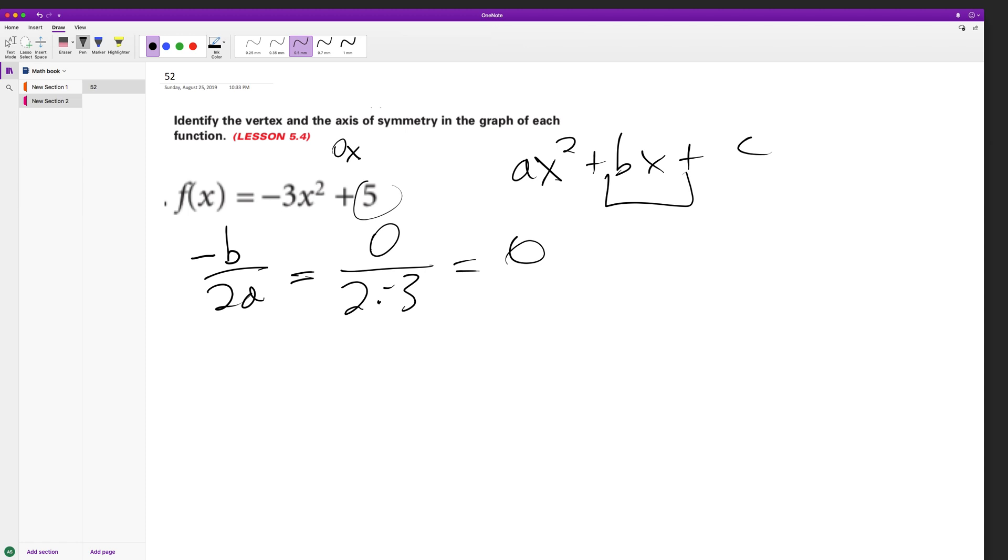So axis of symmetry is just 0. I don't even know how you'd write that, but anyway, that's what it is.